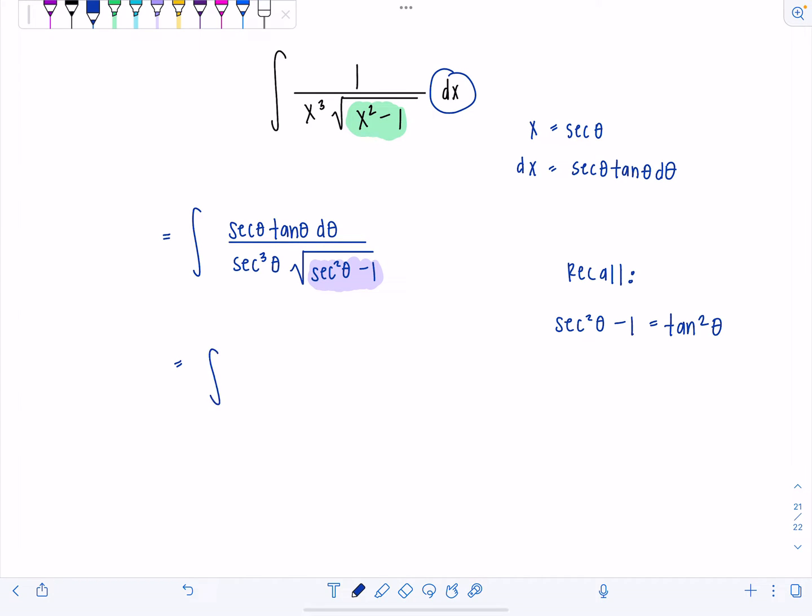So what do I mean by that? I mean you can rewrite this as secant theta tan theta d theta over secant cubed theta. And then we have square root of tan squared theta, which is just going to simplify to tangent theta, not absolute value of tan theta because we've restricted theta to only be in the quadrants where tangent would be positive.